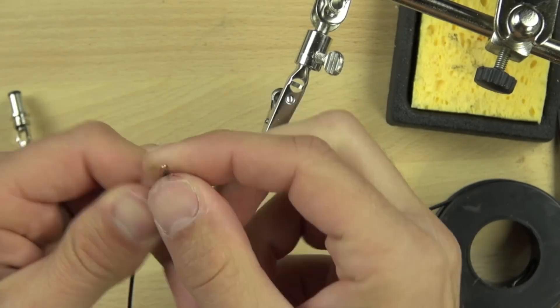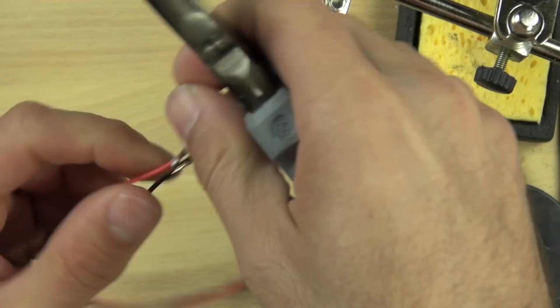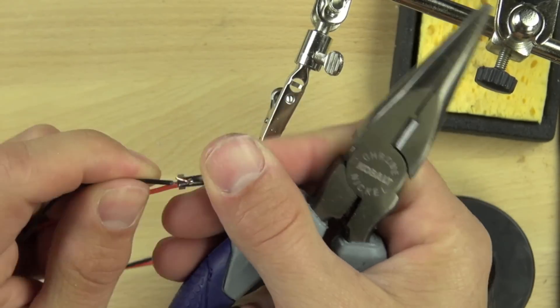We're going to do the same thing for the negative wire, which goes to the outside. Loop it through and then crimp it in place.